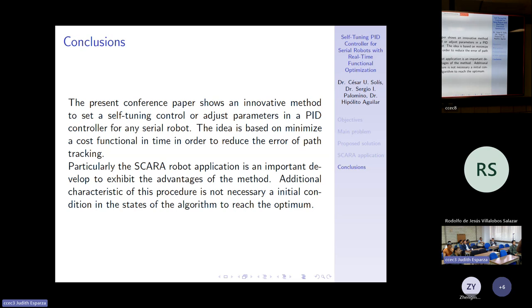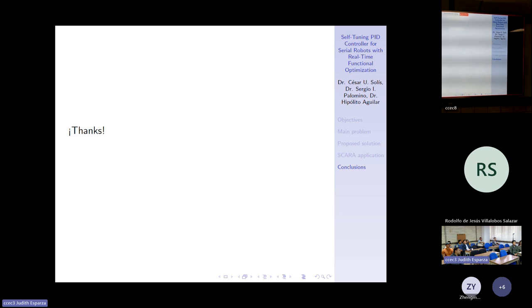Particularly, the SCARA robot application is an important development to exhibit the advantage of the method. Additional characteristic of this procedure is not necessarily an initial condition in the states of the algorithm to reach the optimum. This is some difference with neural networks, for example, where the initial condition is very important.